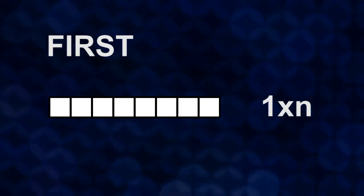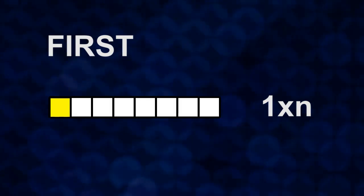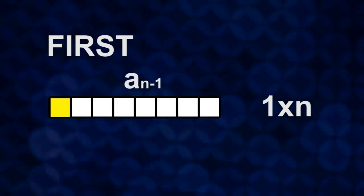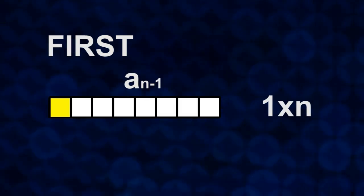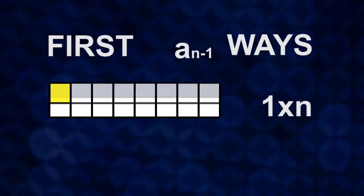First, assume 1 cross 1 board covers the most left side. So, ways to cover 1 cross n board is same to the ways to cover 1 cross n-1 board which is left covered with 1 cross 1 board. Therefore, there are a n-1 ways.